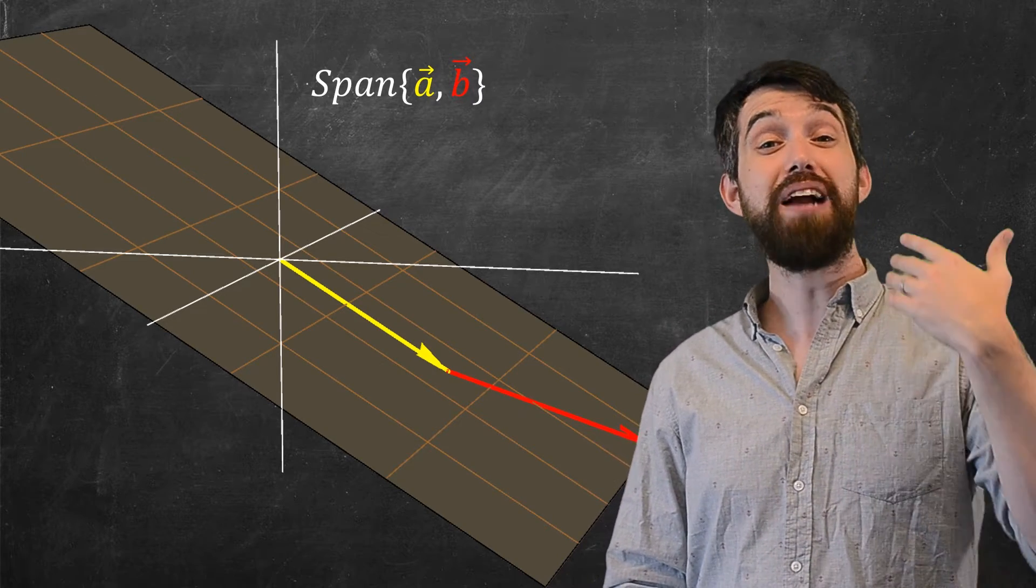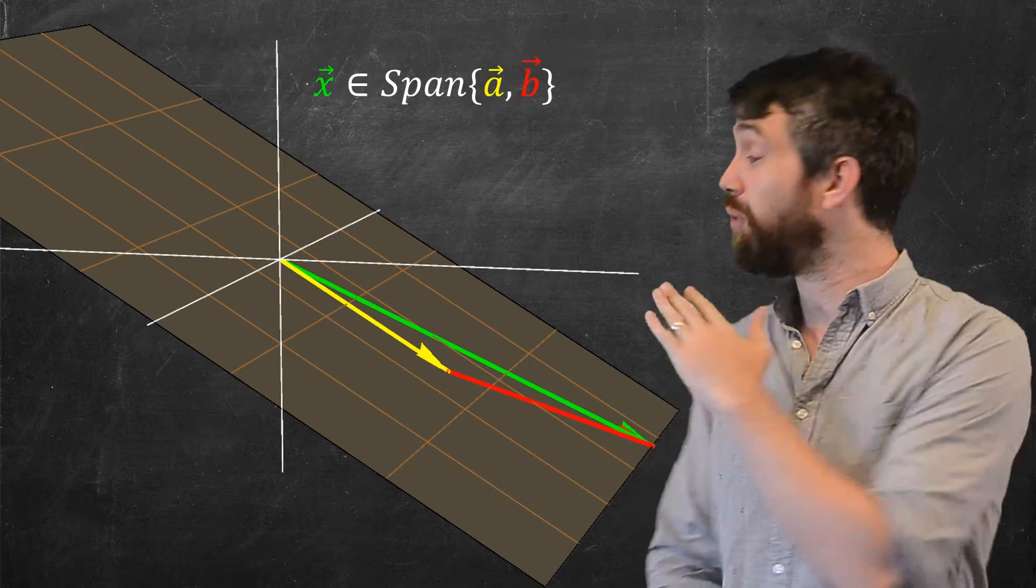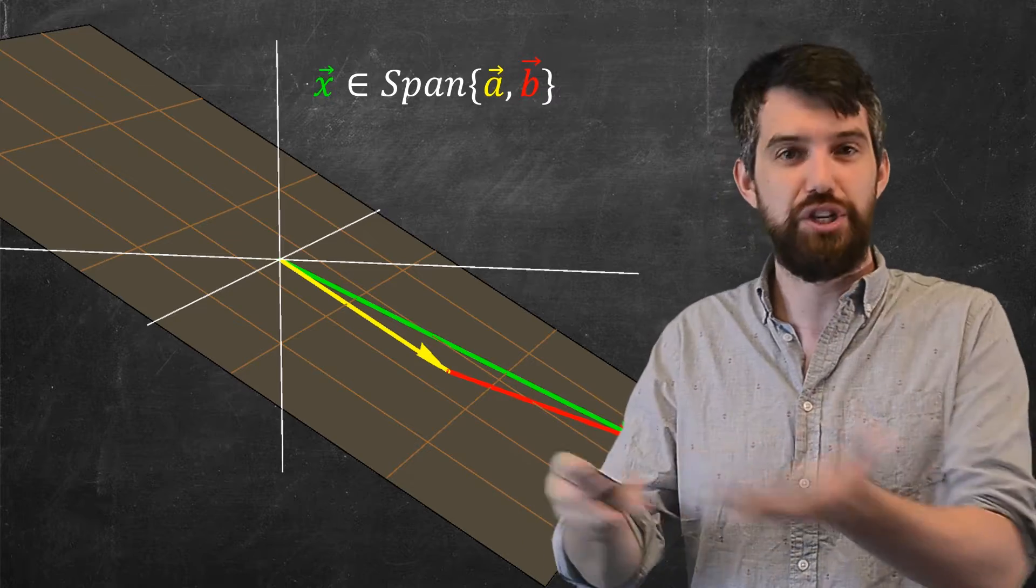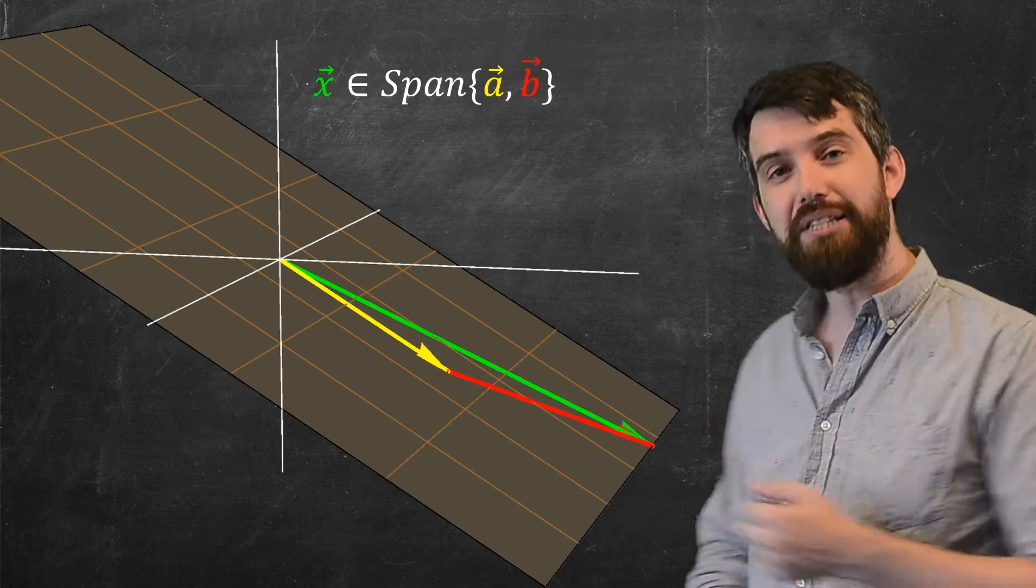Now, if I choose some vector that is in the span, what about this green one, this x vector? This is in the span because it's a linear combination of the A and B, in particular it's A plus B.